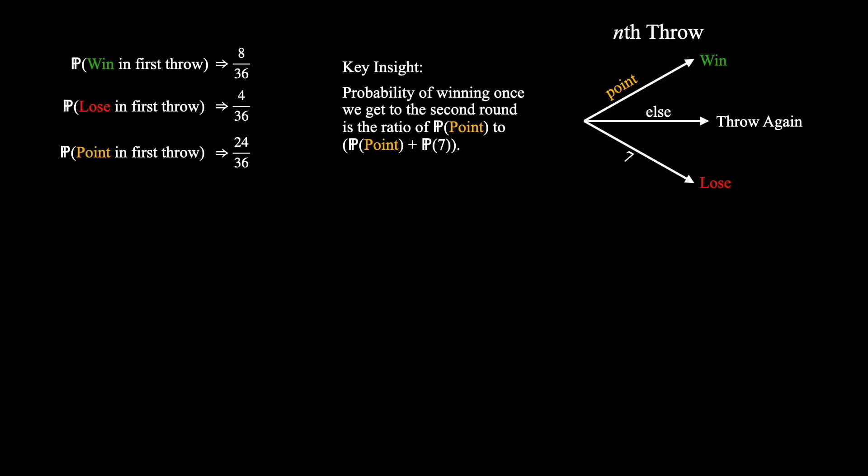We can now try to expand on our key insight. Our probability of winning will change depending on what the point value is since different sum equations come up with different frequencies. Let's start by looking at a simple example. The probability of winning if our point value was 4. We know that the probability of 4 is 3 by 36. Now we can divide this by the probability of rolling that point value plus the probability of rolling a 7 in order to get our ratio. This is simply 3 divided by 3 plus 6.